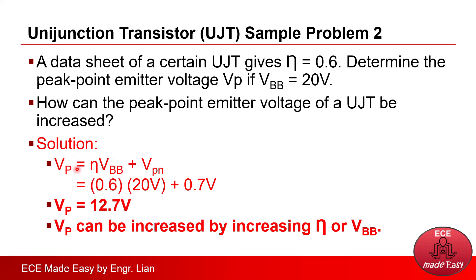Vp can be increased by either increasing N or eta, and that is actually the property of the UJT. We must select the proper UJT with a higher eta or standoff ratio. Or we can also increase Vbb, which is the supply voltage across the UJT.